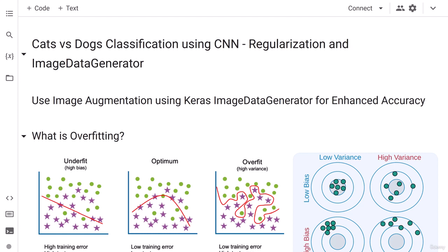Hi everyone. Let's go ahead and get started with cats vs dog classification using convolutional neural network. We will also be seeing regularization and image data generator technique so that we can avoid the overfitting of our neural network.